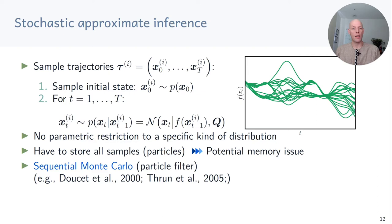The good thing about stochastic inference is that we no longer have a parametric restriction to a specific kind of distribution. Compared to linearization and the unscented transformation, where we always approximated the predictive distribution by a Gaussian, this restriction is no longer there and we can now describe multimodal distributions. However, our distributions are represented by trajectory samples, and storing all of them can lead to memory issues. Stochastic approximate inference is also used in sequential Monte Carlo methods such as the particle filter.